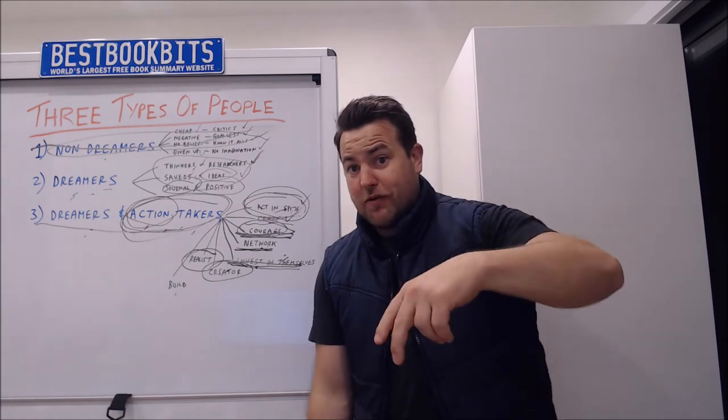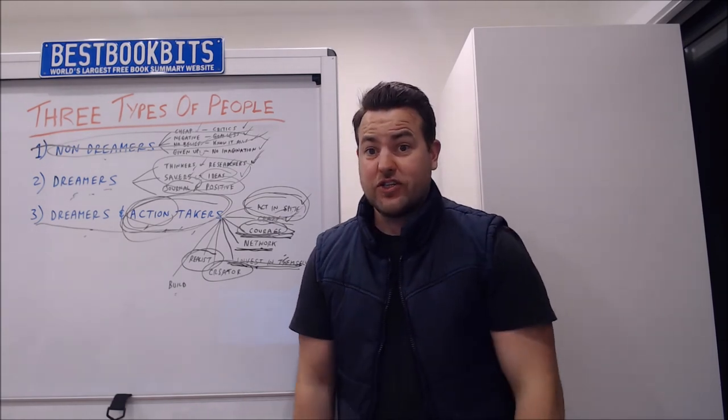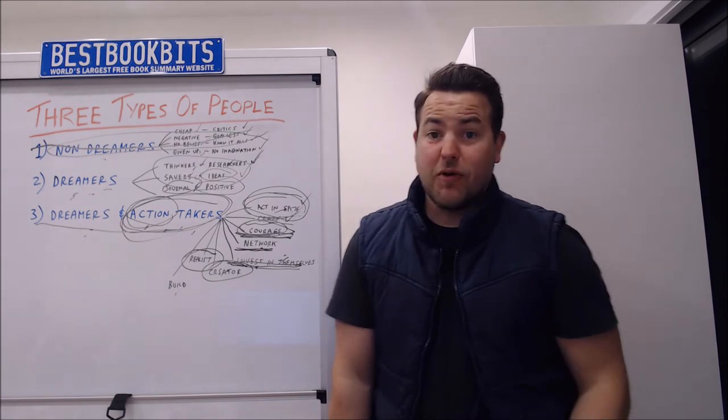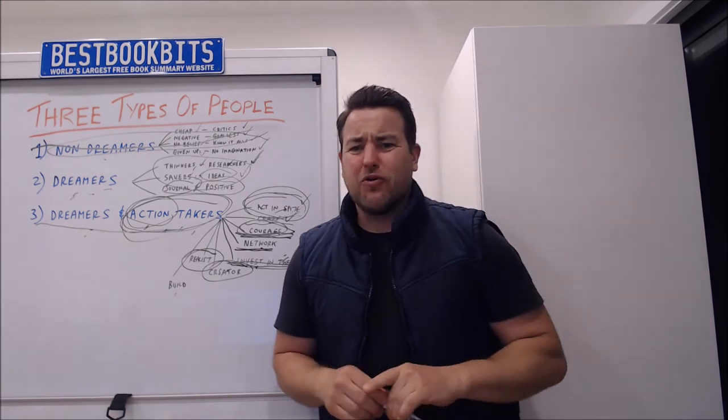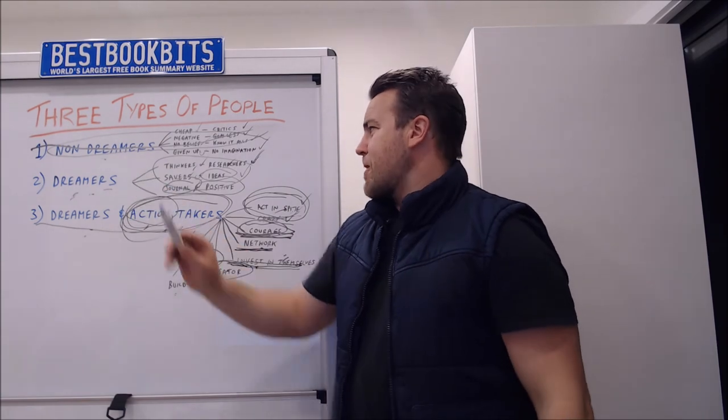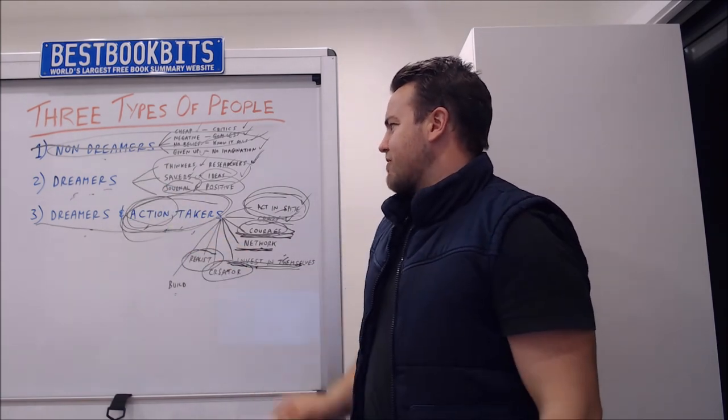Tell me what you think in the comments below. Am I wrong? Am I right? This is just a whiteboard session. I'm in the studio at the moment doing my bookshelf. And I just thought, hey, there are three types of people in the world. People that are non-dreamers, people that dream and dreamers and action takers.